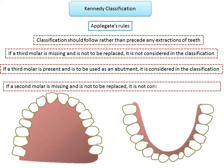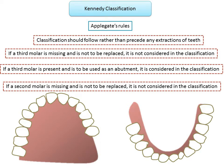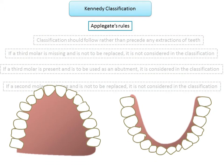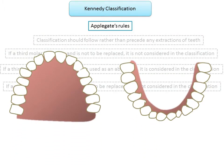Rule 4: if the second molar is missing and it is not to be replaced, it is not considered in the classification. Just as with third molars, if second molars are missing and you are not going to replace them, do not consider them in the classification.